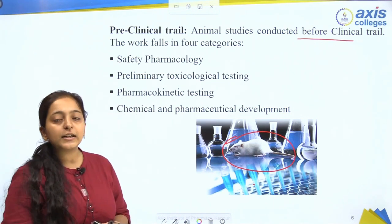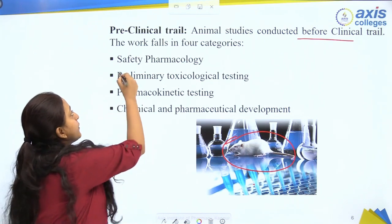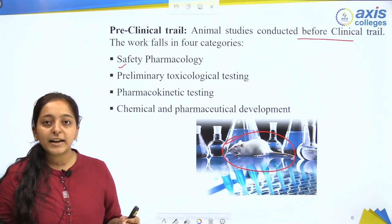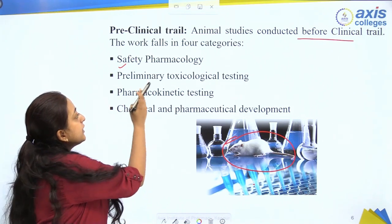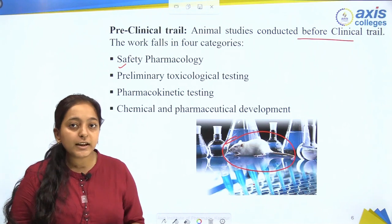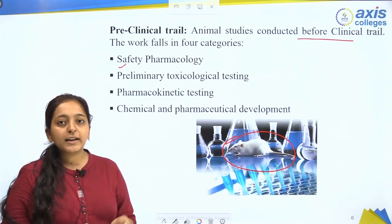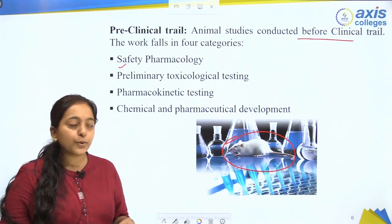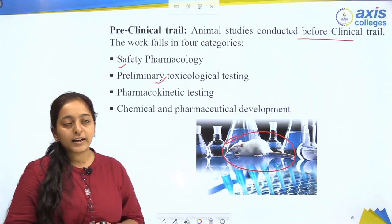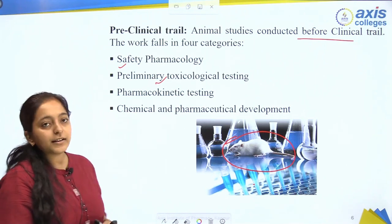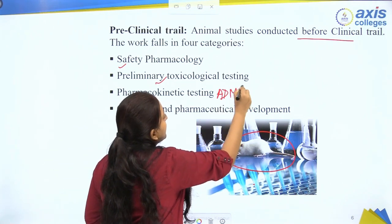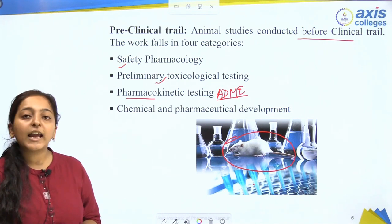In pre-clinical trials, the first component is the drug's safety profile or safety pharmacology. Second is preliminary toxicological testing — understanding when toxicity will appear, at what range, and at what dose the drug becomes toxic. Third is pharmacokinetic testing — studying the drug's Absorption, Distribution, Metabolism, and Excretion in animals. Lastly, chemical and pharmaceutical development is done.